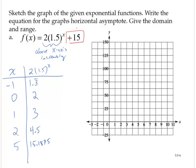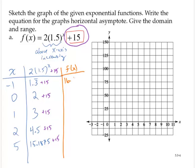Now, let's remember that we need to add 15 to all of those values. And so I'll create a third part of this column. And I'll call that our f of x column. And so 1.3 repeating plus 15, that would be 16.3 bar. 2 plus 15, that's 17. 3 plus 15 is 18. 4.5 plus 15 is 19.5. And 15.1875 plus 15 is 30.1875. And I'll plot these points.